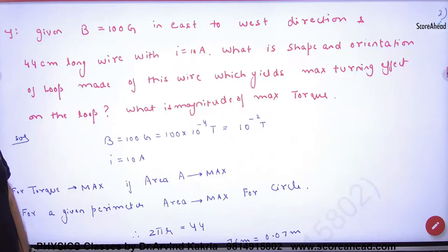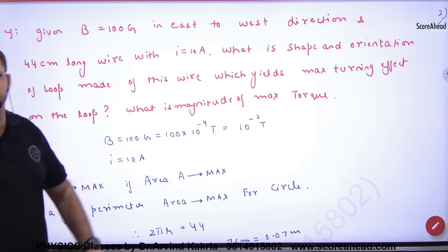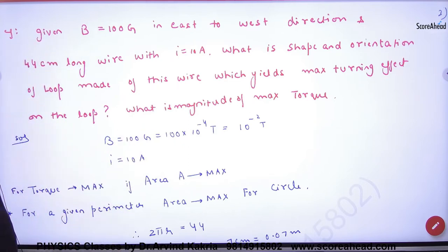B is 100 Gauss. Gauss and Tesla are units in B. Gauss is CGS unit. 100 Gauss means 10 to the power minus 4. B is given.